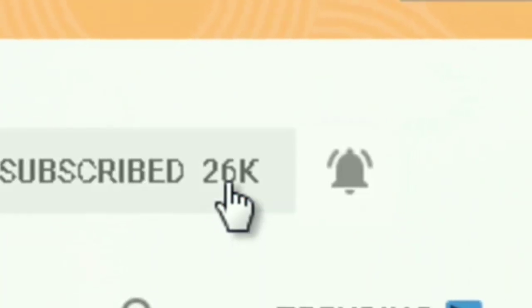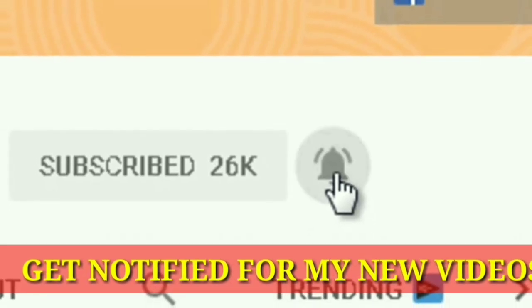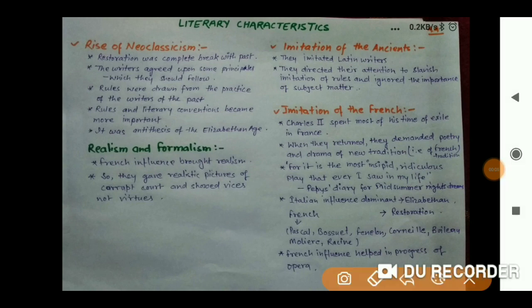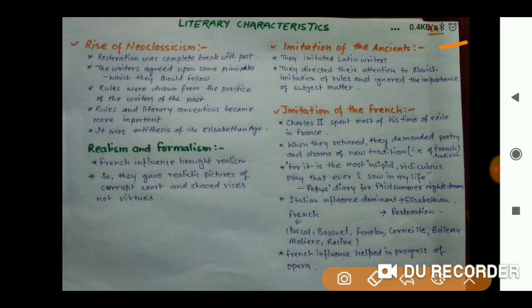Hello everyone, you are most welcome again on my channel. Today is day 44 and we are doing History of English Literature. This is the Restoration Age of Dryden, and we will be talking about the literary characteristics of this age. It is very important to know these in order to understand the literary age.